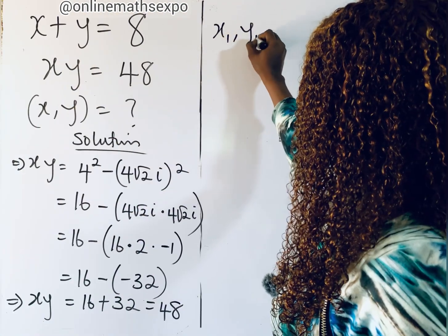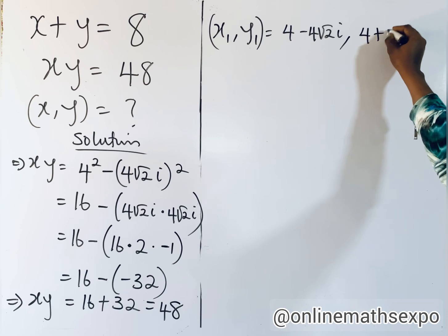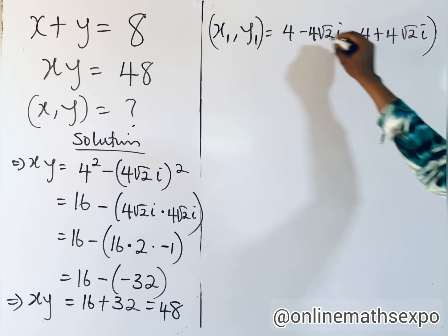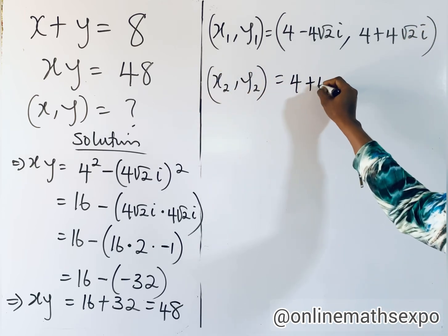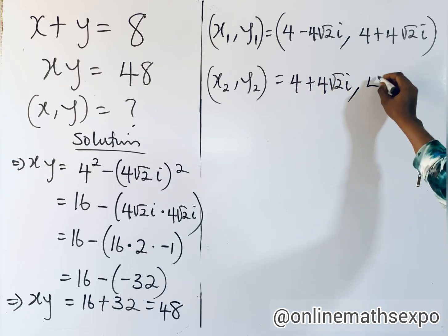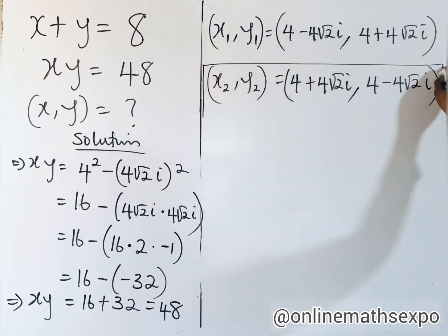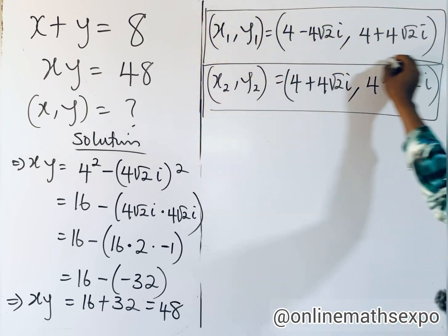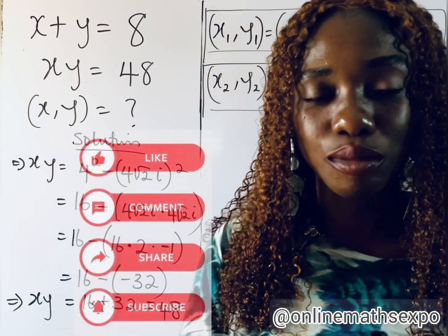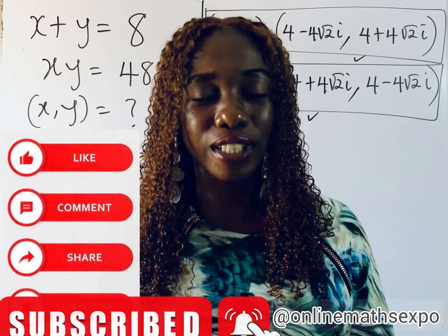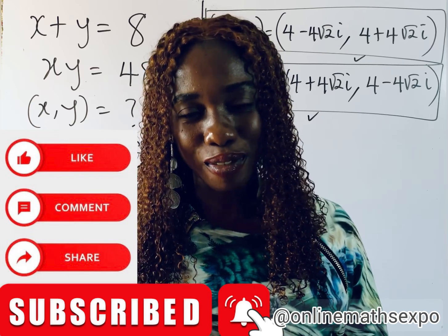In conclusion, the two solution sets are: (x₁, y₁) = (4 minus 4 root 2 i, 4 plus 4 root 2 i) and (x₂, y₂) = (4 plus 4 root 2 i, 4 minus 4 root 2 i). Both are correct. I hope this really helps you — let us know in the comments, give this tutorial a thumbs up, and share for others to learn. Thank you for engaging with us!